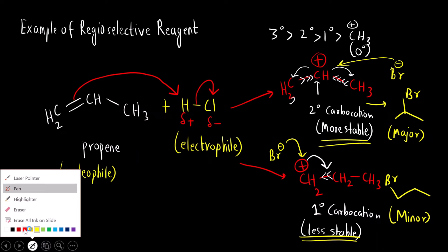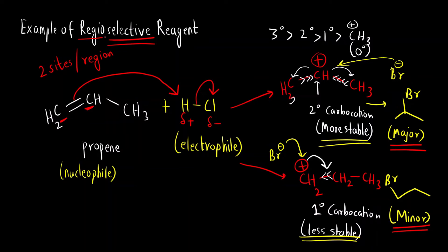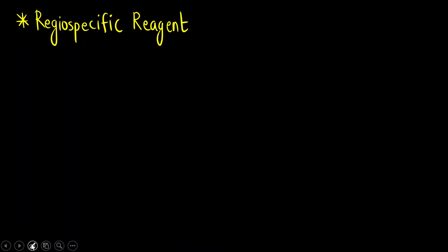You can see how the reagent is attacking at two different sites — this is one site and this is another site. There are two different sites or regions that are possible. At one time it attacks only one particular site, but overall in the reaction both products are formed — one is a major product and another is the minor product. That is why it is called selective. Regio because there are two different regions or sites of reaction possible. This was the example of a regioselective reagent.